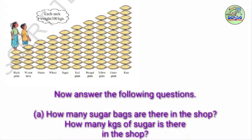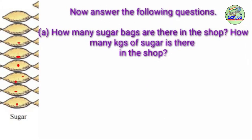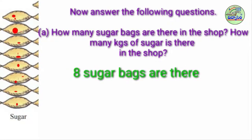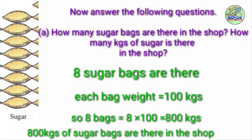Now answer the following questions. How many sugar bags are there in the shop? How many kgs of sugar is there in the shop? We have to find out the sugar bags: 1, 2, 3, 4, 5, 6, 7, 8 — 8 sugar bags are there. Each bag contains 100 kgs, so 8 into 100 = 800 kgs of sugar is there in the shop.